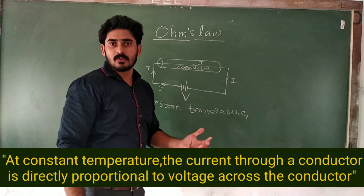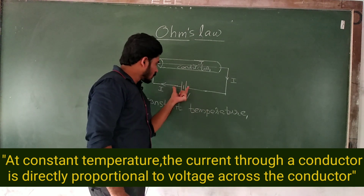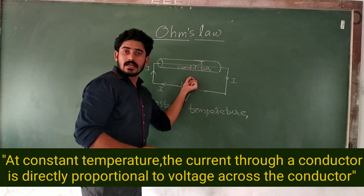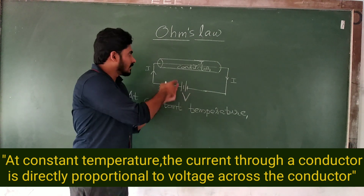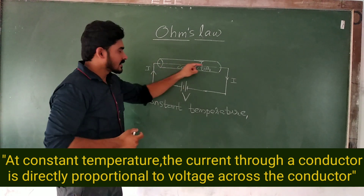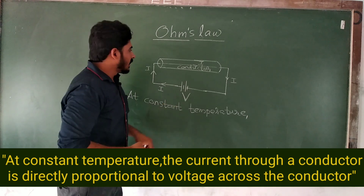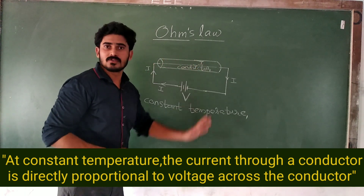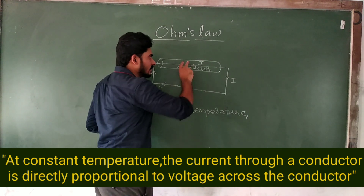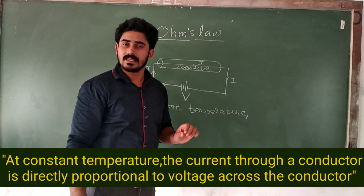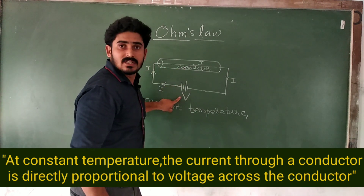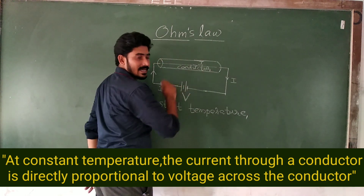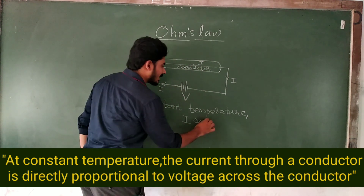Ohm's Law — at constant temperature, this conductor's current is directly proportional to the voltage supplied. The current passing through the conductor will be more if the voltage given is more. If the voltage given is less, then the electric current passing through the conductor will also be less.